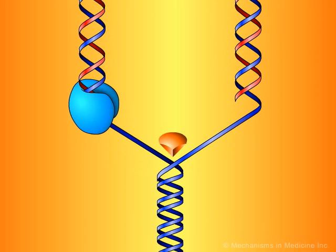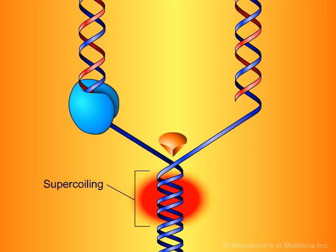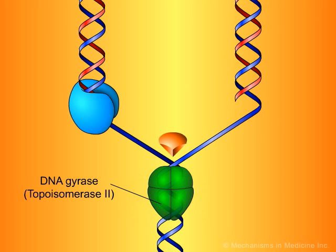As the replication forks move forward, positive superhelical twists in the DNA begin to accumulate ahead of them. In order for DNA replication to continue, these superhelical twists must be removed. The bacterial enzyme DNA gyrase, which is also known as topoisomerase II, is responsible for removing the positive superhelical twists so that DNA replication can proceed.